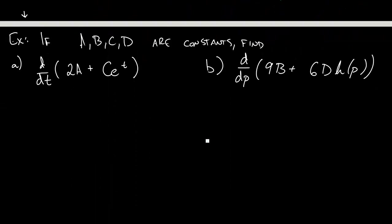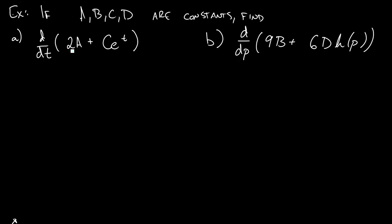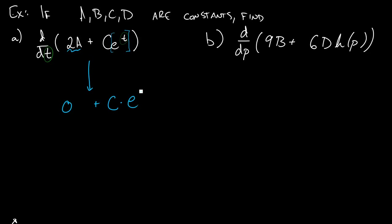Let's do a few more complicated examples. We want to take the derivative with respect to t of (2a + c·eᵗ), where a and c are constants and t is the variable. The derivative of 2a is 0, since 2 times a number is still just a number. For c·eᵗ, c is a constant times something we know how to differentiate — the derivative of eᵗ is eᵗ — so we keep c out front and get c·eᵗ. No matter what fixed values a and c are, the derivative of this expression is simply c·eᵗ.